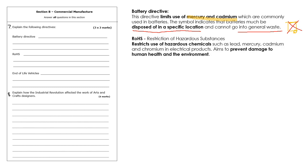RoHS stands for Restriction of Hazardous Substances. It restricts the use of hazardous chemicals — mercury, cadmium, lead, and chromium — in electrical products. These substances, if handled or leaked into the environment, can be quite damaging, so RoHS ensures products don't use a lot of these substances, protecting the environment and people.